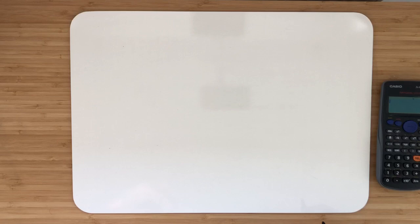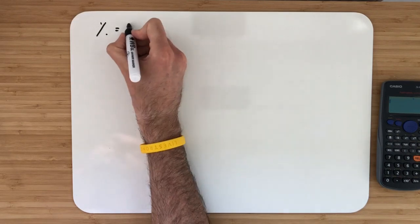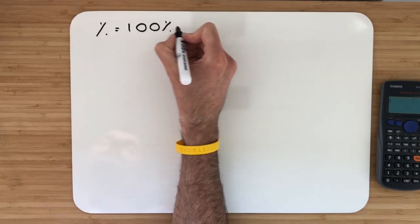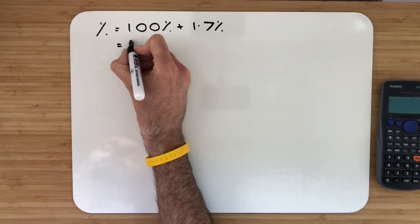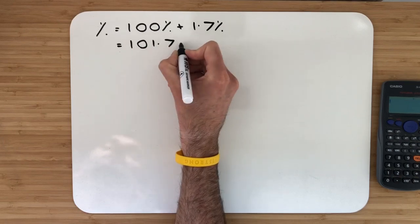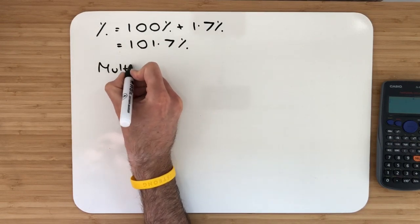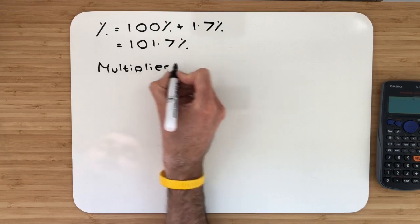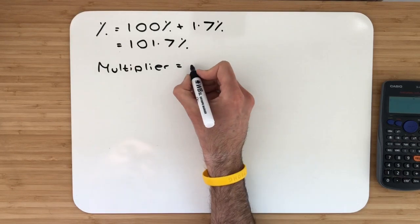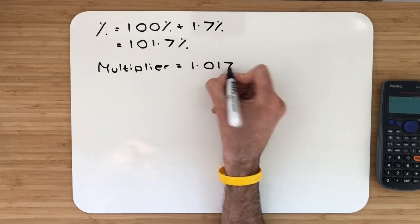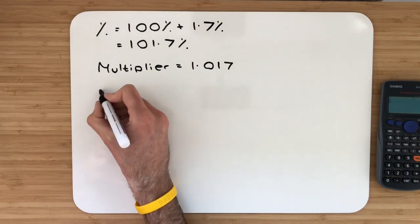In Example 2, we're looking to calculate the compound interest gained on an investment over five years. To begin with, let's get our percentage. I'm starting at 100%, and my interest rate is 1.7%, so that will give me 101.7%. To do our calculation, we need to get a multiplier. 101.7% means out of 100, so therefore that should be 1.017. We should be familiar with how to find the multiplier from our previous calculations.